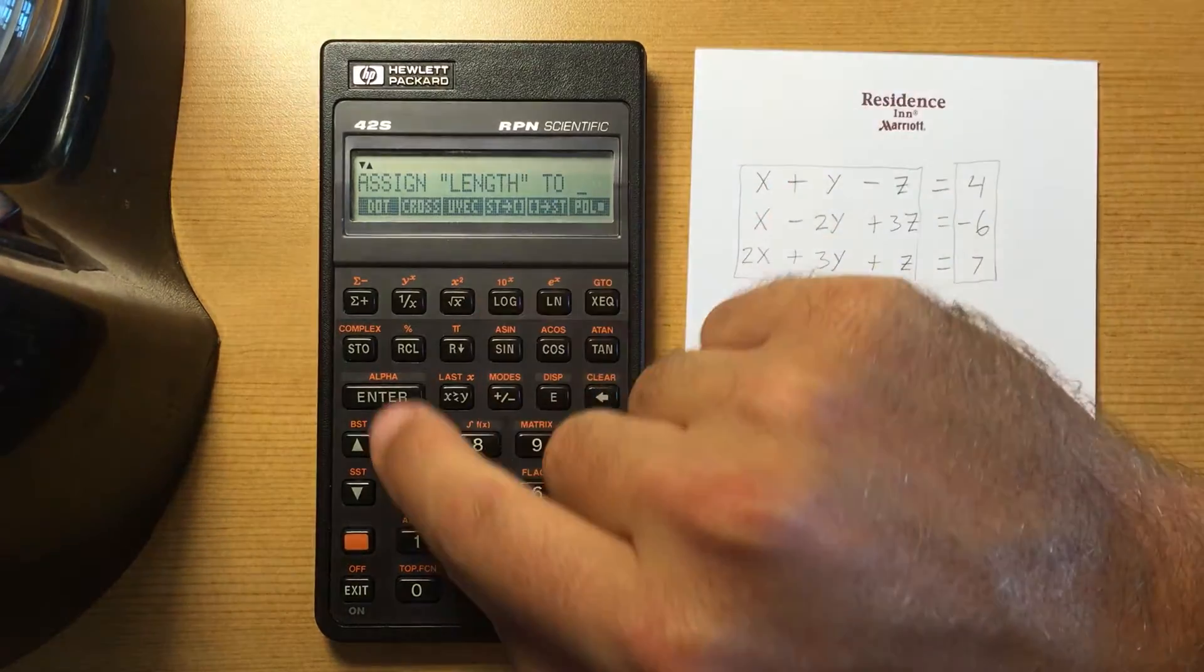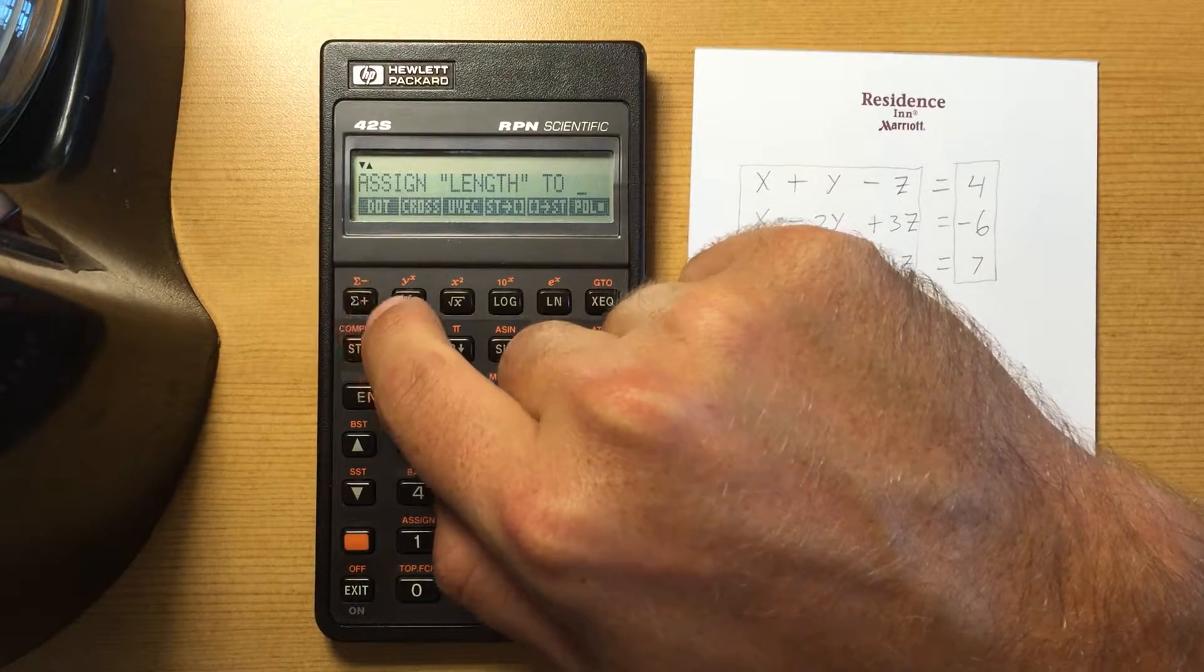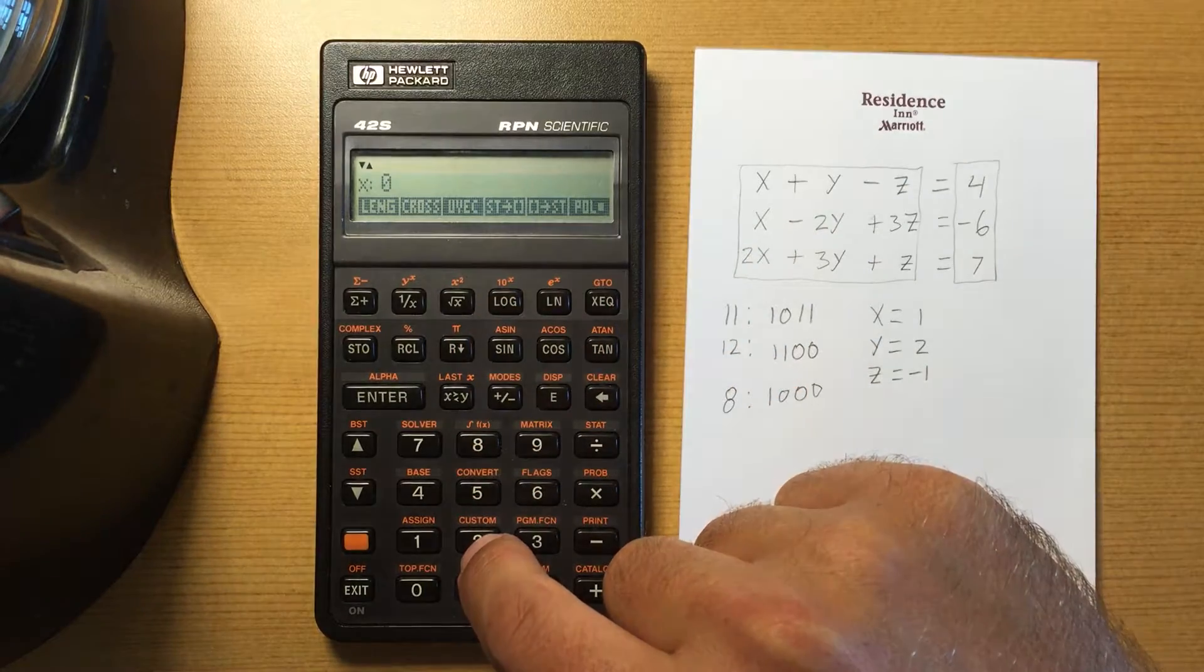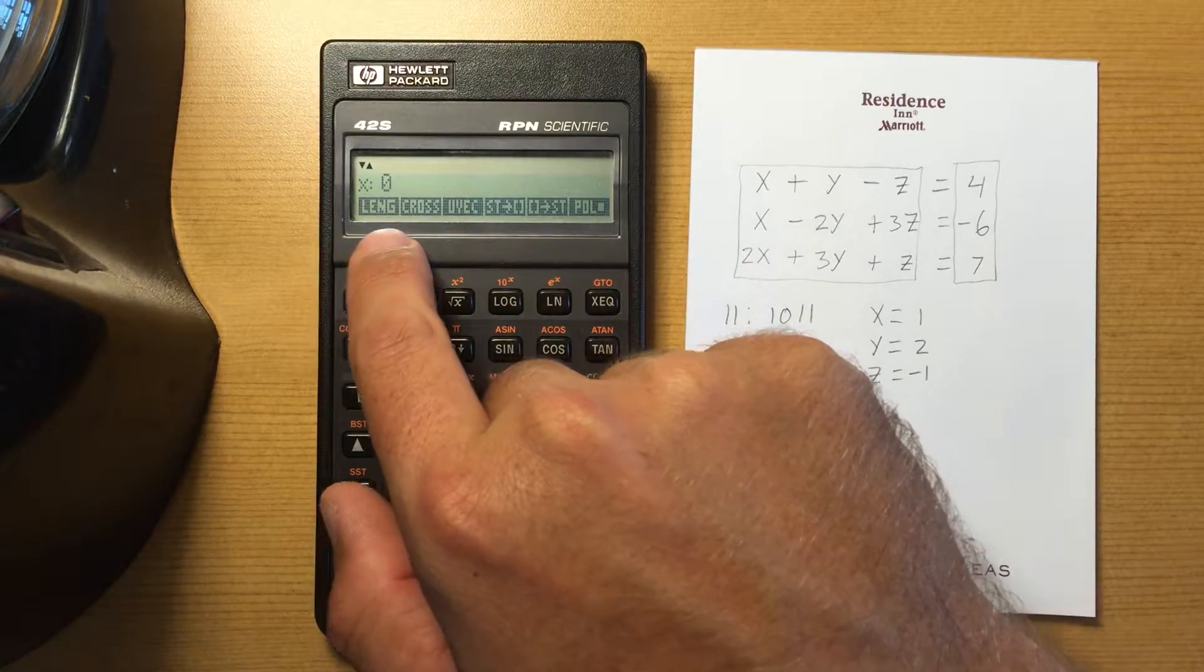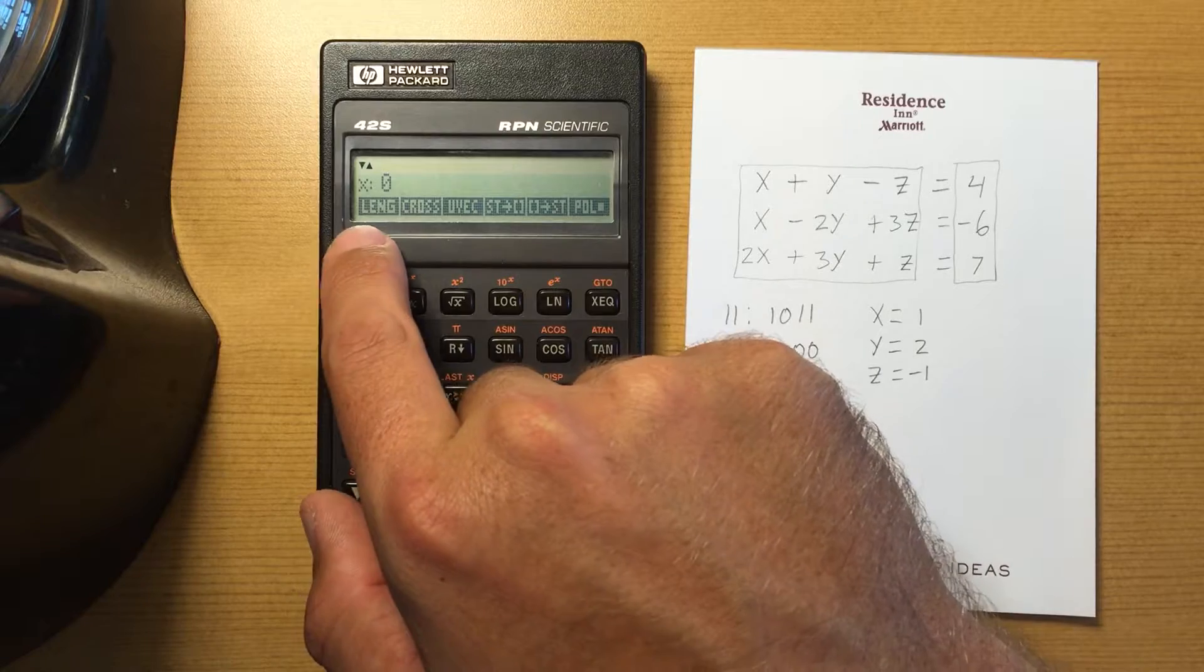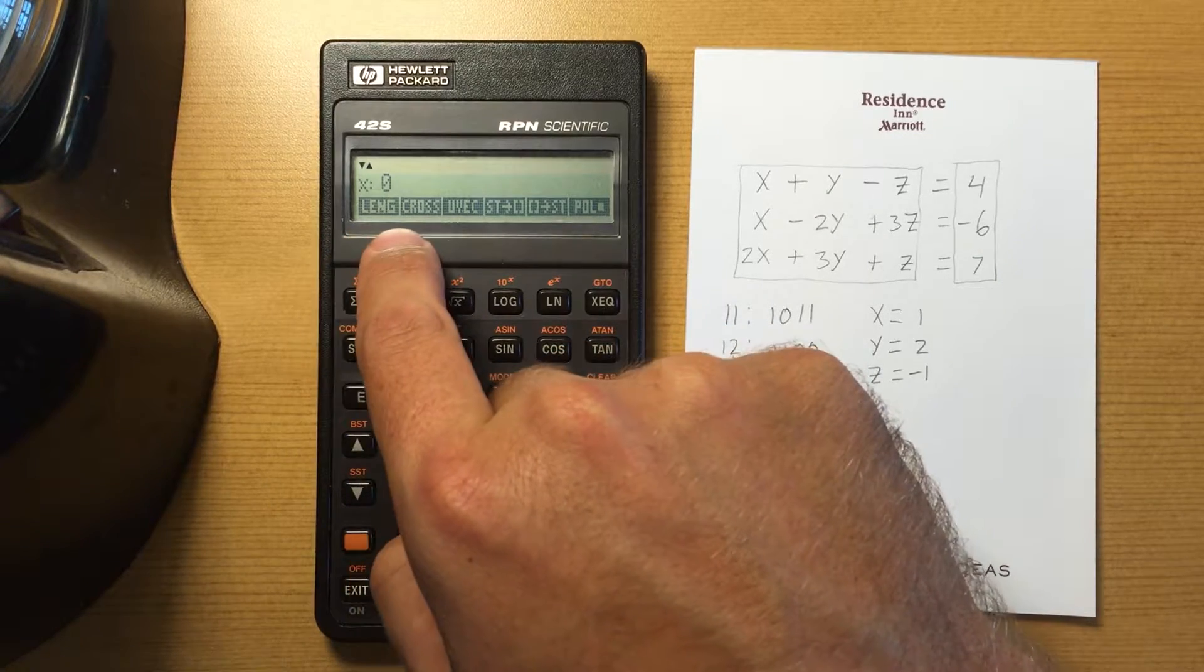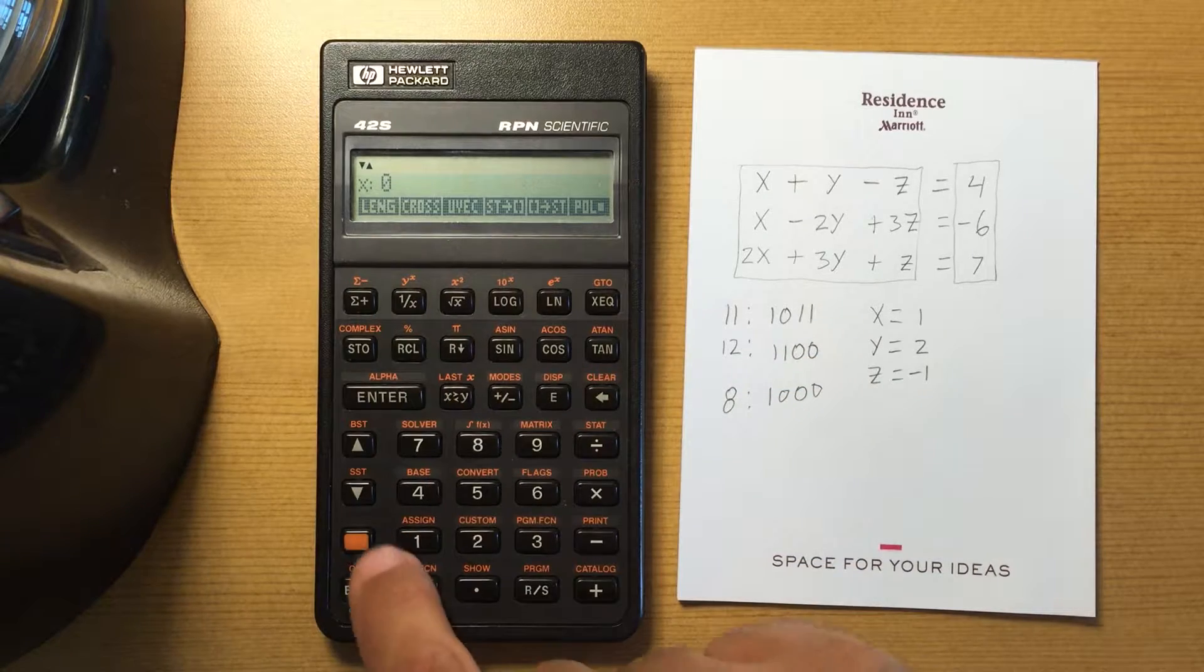So I want to assign this to say key number one, and then it leaves the custom menu up. I think that's flag 27. So now it shows this program that's part of my custom menu.